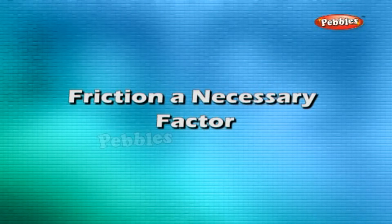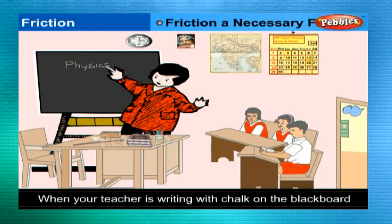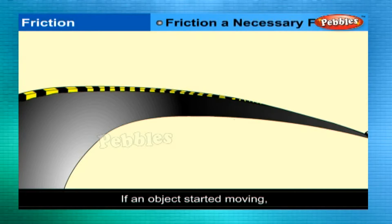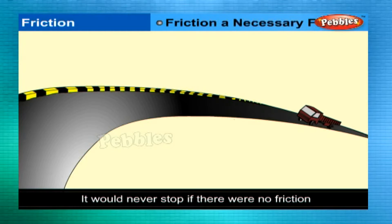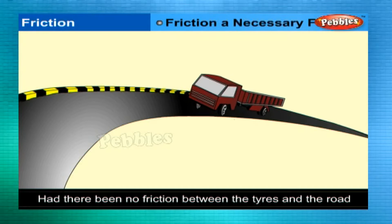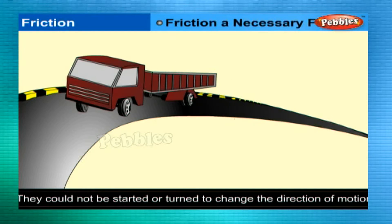Friction is a necessary factor. When your teacher is writing with chalk on the blackboard, its rough surface rubs off some chalk particles which stick to the blackboard. If an object started moving, it would never stop if there were no friction. Had there been no friction between the tires of automobiles and the road, they could not be started, stopped, or turned to change direction.